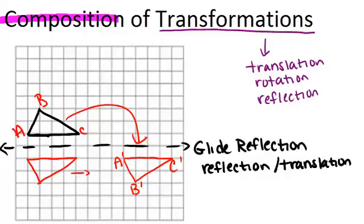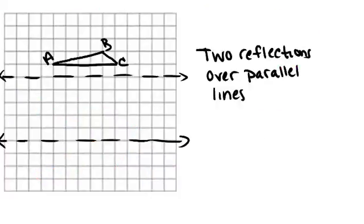If we start out with triangle ABC and want to do two reflections across each of the lines, let's see what will happen. First, we'll take ABC and reflect it across this line, and this would be our result.